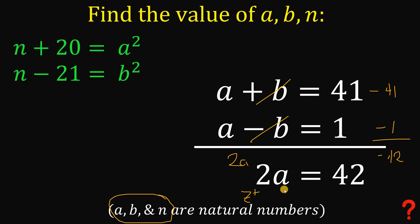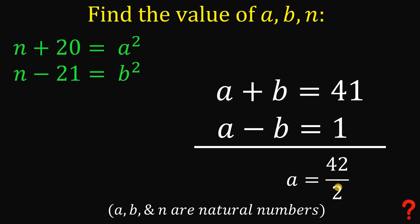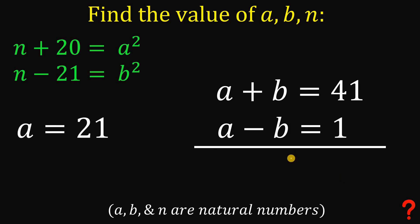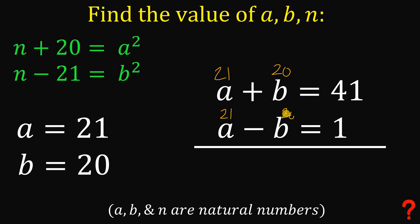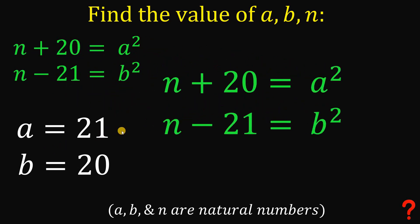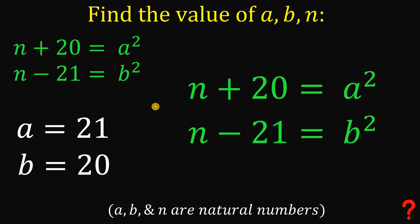Dividing both sides by 2 gives a equals 42 over 2, which equals 21. With a equals 21, we can easily solve for b: 21 plus b equals 41, so b equals 20. Checking with the second equation: 21 minus b equals 1, which also gives b equals 20.